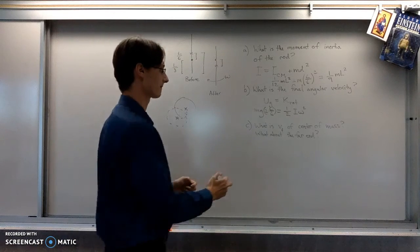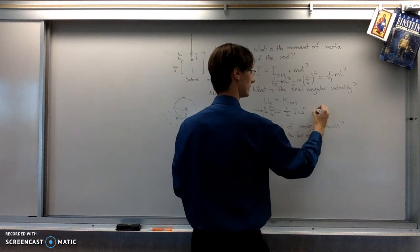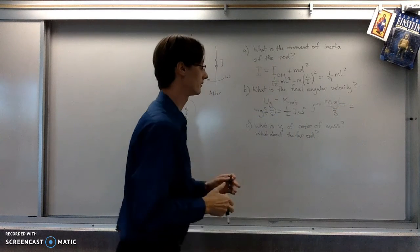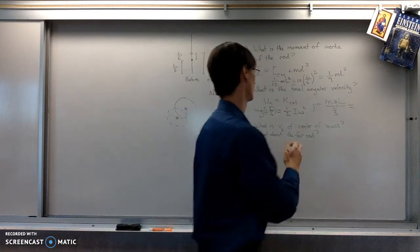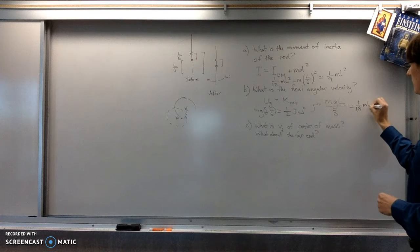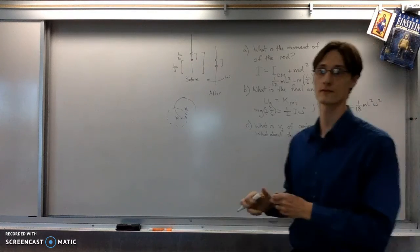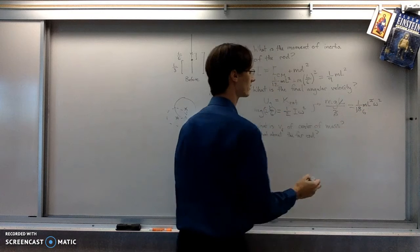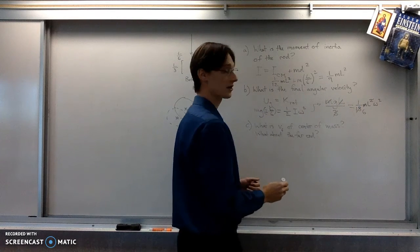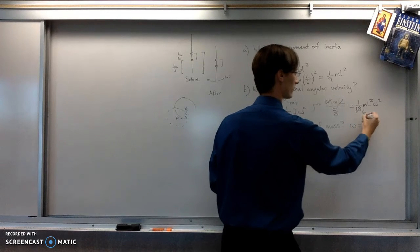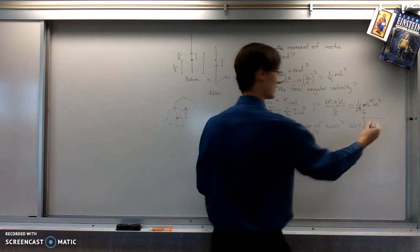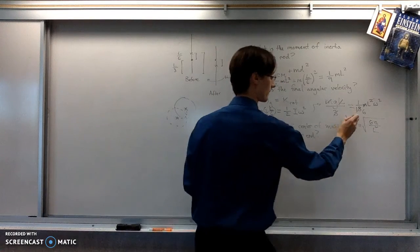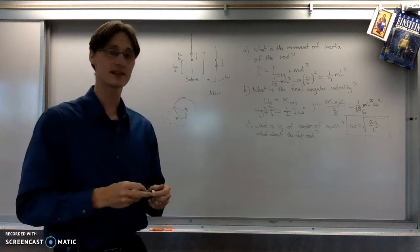And then we'll do a little bit of algebra. This is going to simplify to MgL over 3. This was one-ninth ML squared. One-half of that would be one-eighteenth ML squared. One of those L's cancels. Factor of 6 left over. The M's cancel. So our omega value is going to be square root of 6G over L.